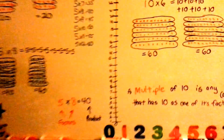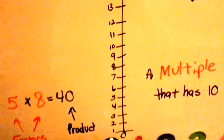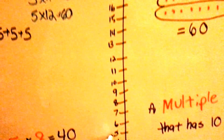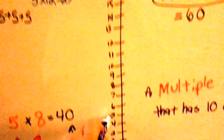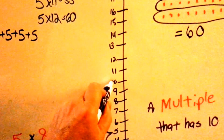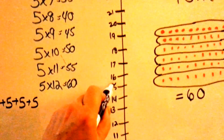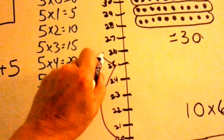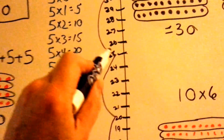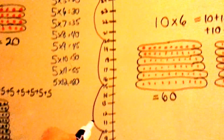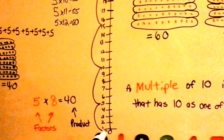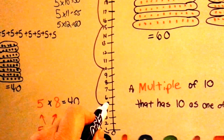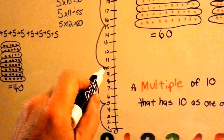Let's look at skip counting really fast. Let's skip count by 5s. We've got 0, 5, 10, 15, 20, 25, 30. We jumped every fifth one. Count to 5 and that's where you stop.